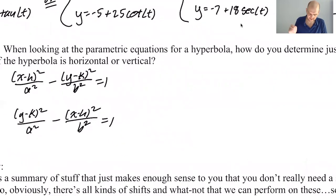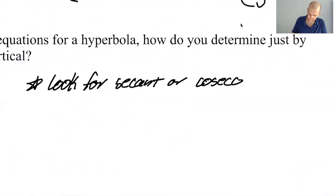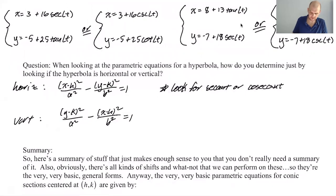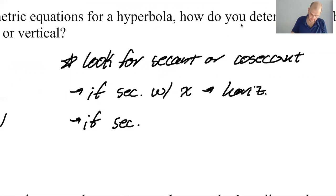To figure out if it's horizontal or vertical, look for secant or cosecant, because that determines it. If secant's with x, then it must be that x comes first because it's got to be secant squared minus tan squared, so it would be horizontal. If secant's with y, it means that y must come first, so it would be vertical.